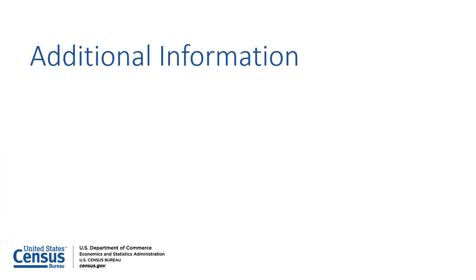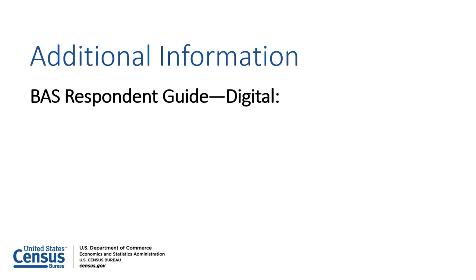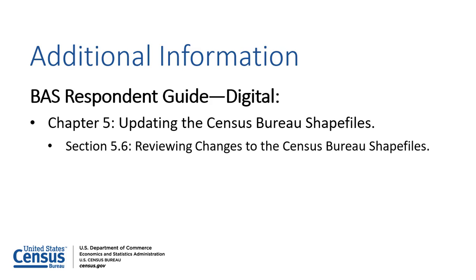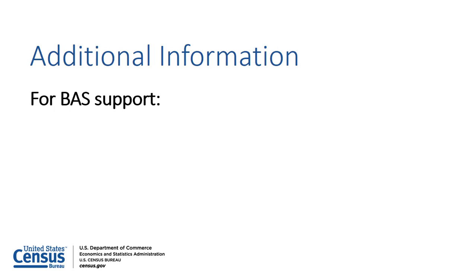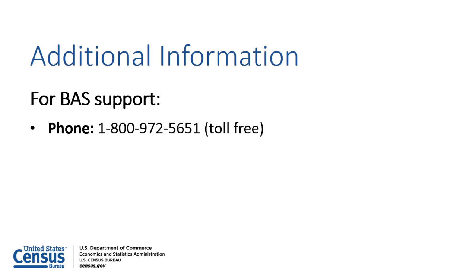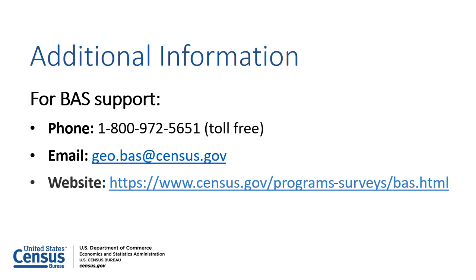For assistance creating a digital BAS submission, refer to the Digital Respondent Guide, which is available on the BAS website. Chapter 5, Section 5.6 provides instructions on reviewing changes to the Census Bureau shapefiles. The Partnership Toolbox Overview document, included with the Toolbox download, provides step-by-step instructions for using the Attribute Check tool. For BAS support, please contact the Census Bureau by phone toll-free at 1-800-972-5651, or by email at geo.bas@census.gov. Participants may also refer to the BAS website for resources.